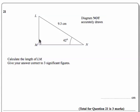Question 21. We've got a right-angled triangle here with an angle of 42 degrees and this side is 9.3 centimeters. It's asking us to find the length of LM. This looks like trigonometry to me.